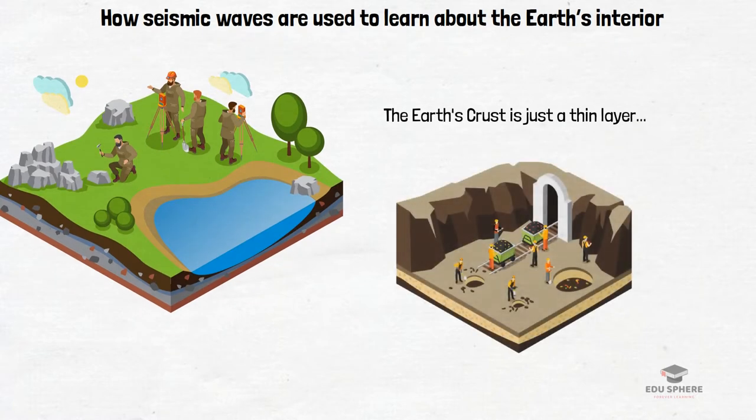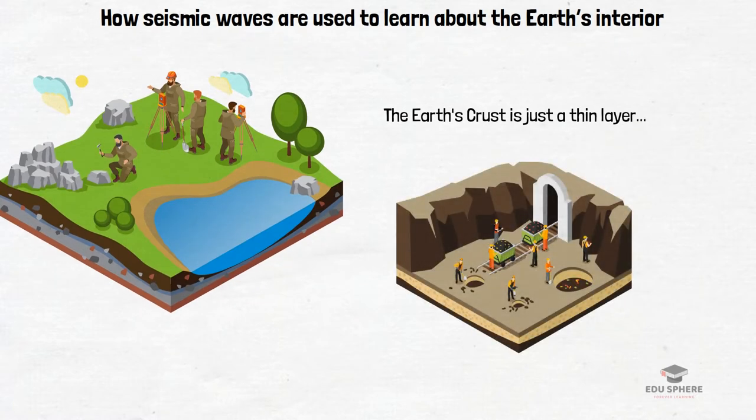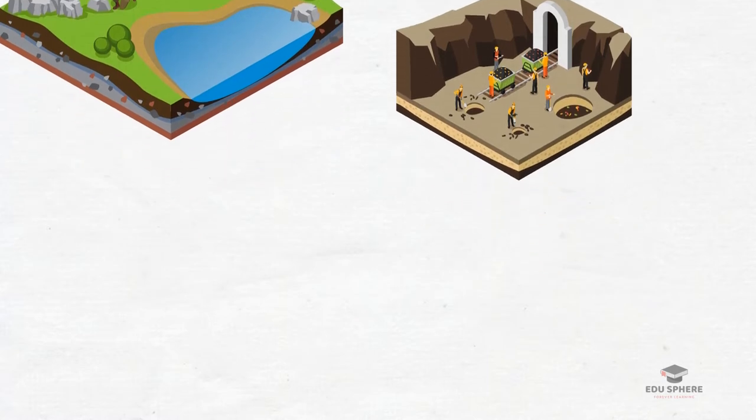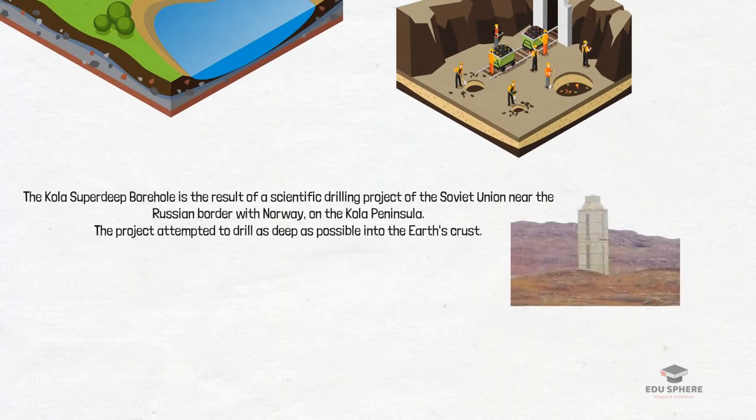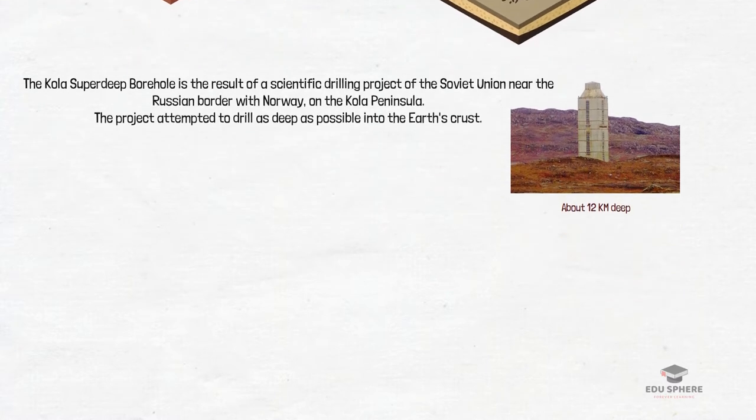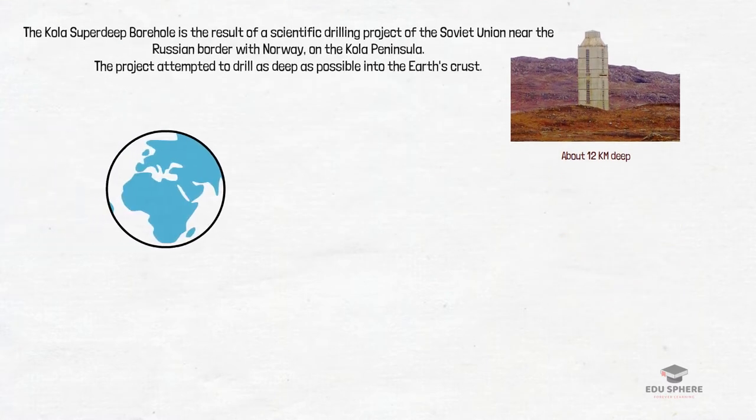Some deep mines penetrate 3 kilometers into the Earth and a deep oil well may go as far as 8 kilometers beneath the surface. The deepest scientific well in Russia has reached only 12 kilometers. But Earth has a radius of about 6370 kilometers. So it is obvious that geologists can only scratch the surface when they try to study directly the rocks beneath them.